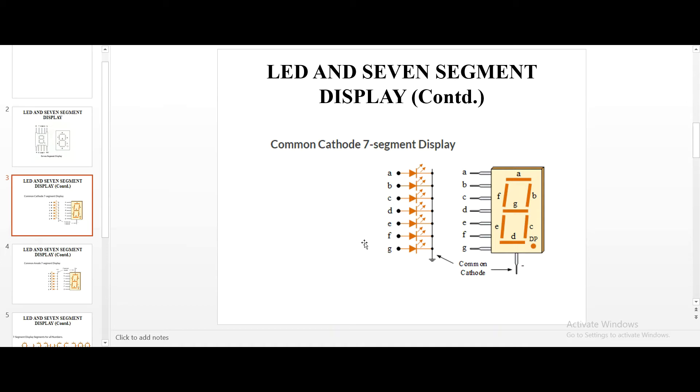When I say powered, it means zeros or ones is sent as input signals. Usually, the zeros will be 0V and ones will be 5V. So, this is common cathode 7 segment display.